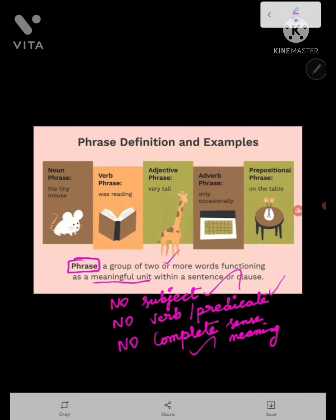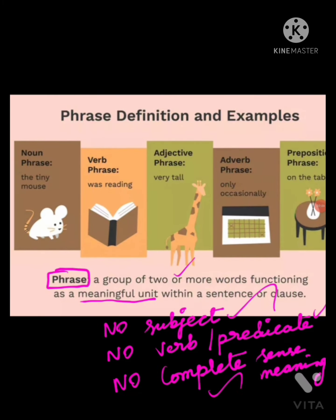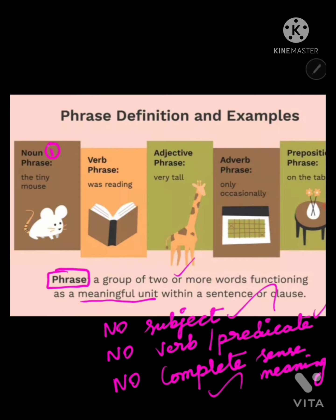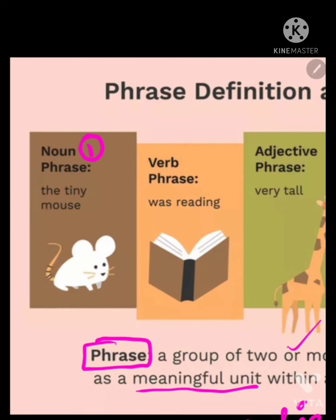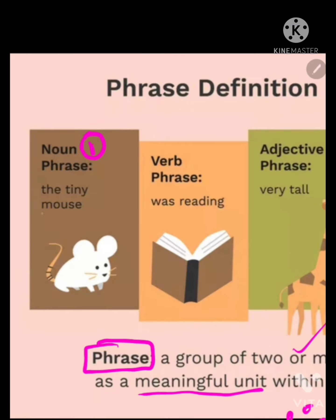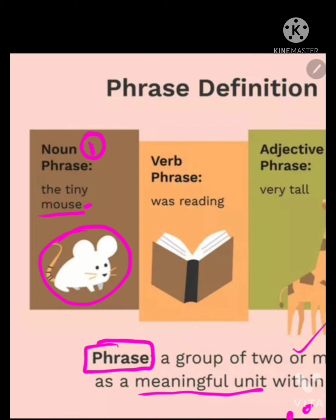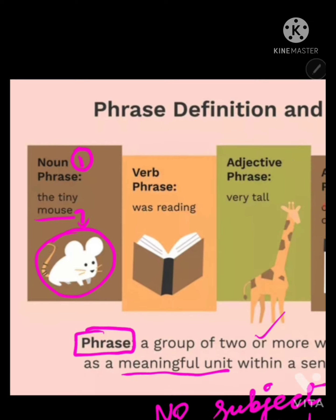Now we have five types of phrases. The first one is the noun phrase. Look at this — what is this animal? It is a mouse. When you give the name of the animal along with a quality or description, that is a noun phrase.